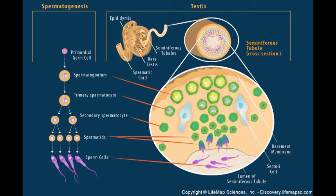Spermatogenesis begins at puberty, around 13 to 16 years of age, and continues until old age. Located at the periphery of each seminiferous tubule are diploid stem cells called spermatogonia. During embryonic development, the spermatogonia actively divide by mitosis to ensure that a continuous supply of sperm is always available throughout the entire lifetime. Hormonal influence stimulates the spermatogonia to grow and differentiate into diploid cells called primary spermatocytes. The secretions of the hormone testosterone stimulate the primary spermatocytes to meiotically divide. Meiosis 1 produces haploid cells called secondary spermatocytes.